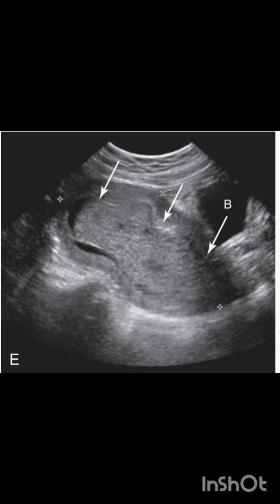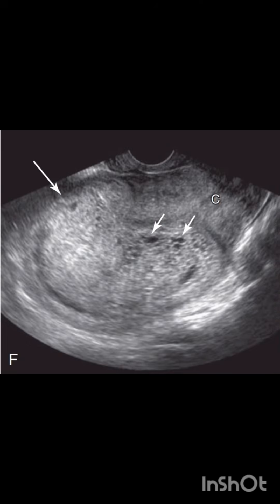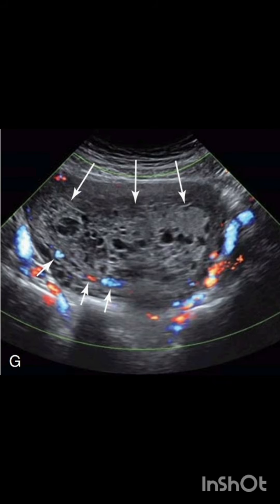This image shows a solid-appearing mass that occupies the uterine cavity, which is difficult to characterize on a transabdominal scan. When a transvaginal scan was done on the same patient, smaller cysts that were initially not visible on the transabdominal scan became apparent, confirming that it is a molar pregnancy.